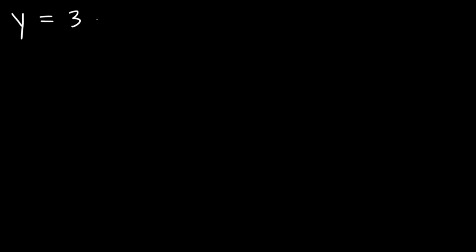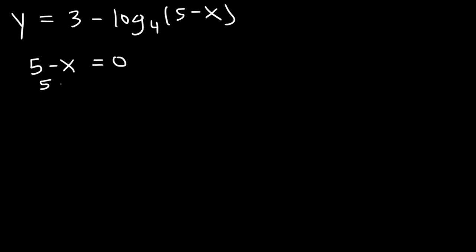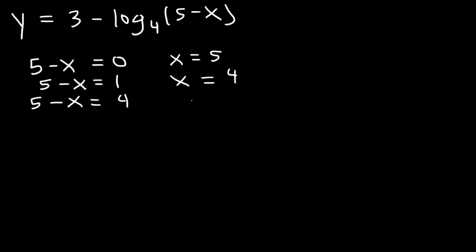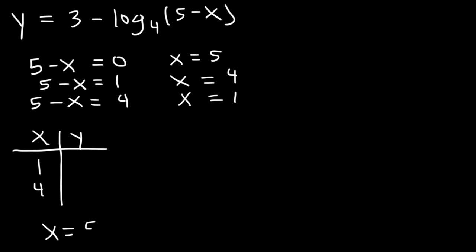Now let's try one more example: 3 minus log base 4 of (5 minus x). Set 5 minus x equal to three things: 0, 1, and the base 4. When set to 0, x equals 5 — that's the vertical asymptote. 5 minus 4 is 1, so x is 4. And 5 minus 1 is 4, so x is 1. The two x values we need are 1 and 4, and the vertical asymptote is x equals 5.